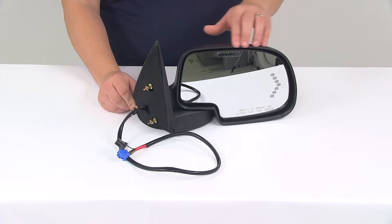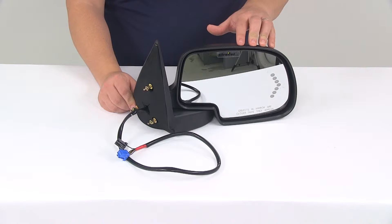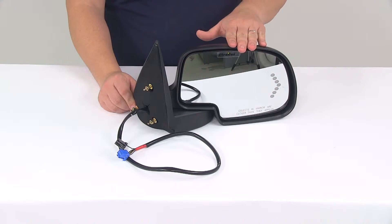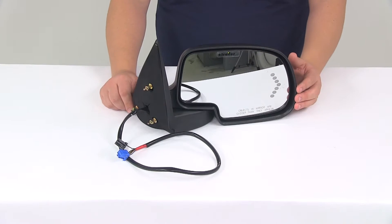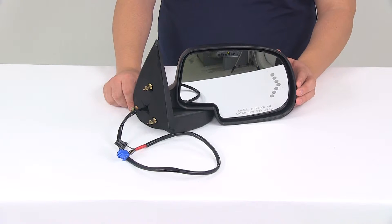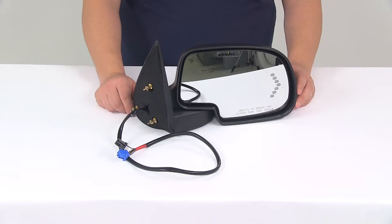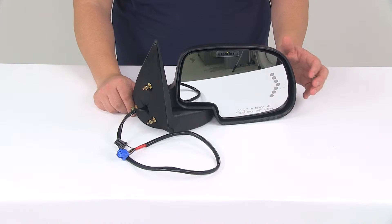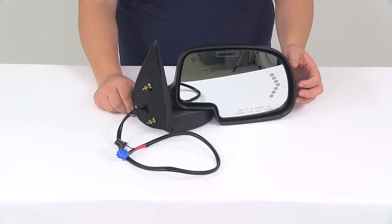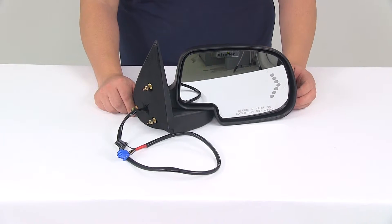It has a heated mirror glass that does a great job at clearing frost and ice and reducing fogging. It features a red LED arrow in the mirror face that lights up when the turn signal is activated. That's going to use high intensity LEDs that are brighter than standard turn signal lights, so a really nice design in that area.